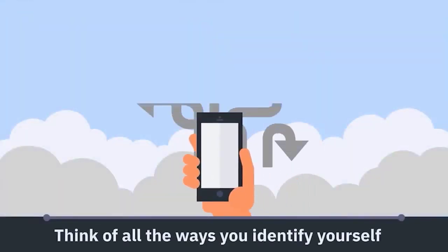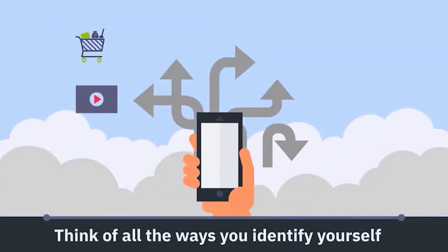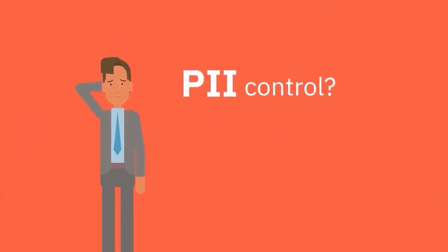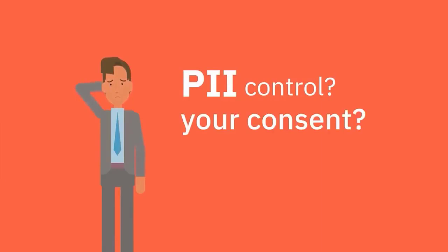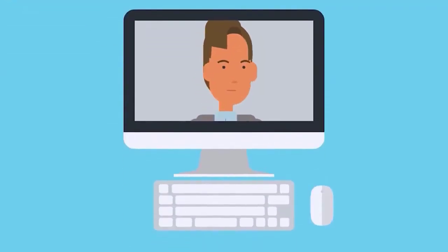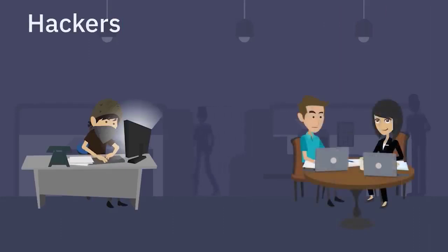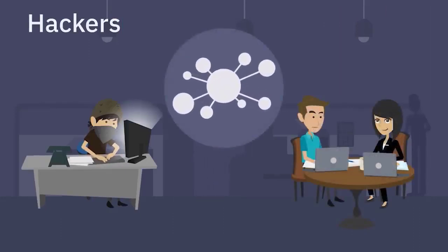Now think of all the ways you identify yourself with all your different forms of ID, multiplied by all your daily online and offline interactions. Just how much of your personal identifiable information do you control? How much of it is out there being used without your consent, and how much of it is stored in locations you don't know about? As you think about where your identity is and who has access to it, hackers are constantly prowling honeypots to exploit personal information aggregated into centralized systems of records.